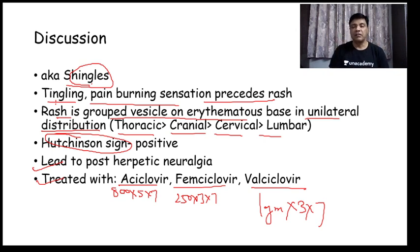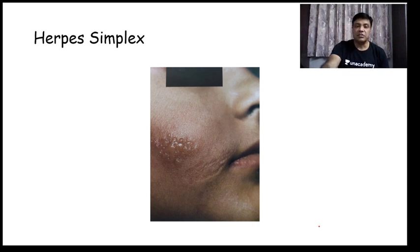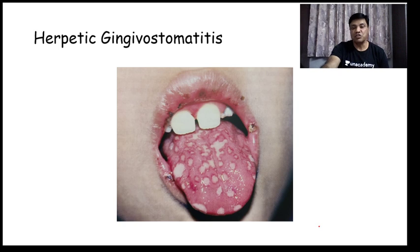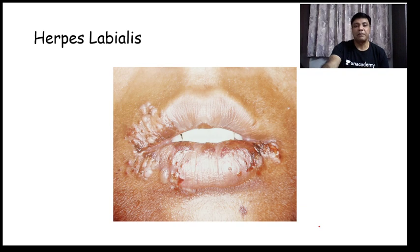Herpes simplex consists of grouped vesicles on an erythematous base and can occur anywhere in the body. Herpetic gingivostomatitis is the most common manifestation of herpes simplex, where the gingiva and oral cavity are involved. Herpes labialis, or fever blisters, are lesions seen on the mucocutaneous junction of the lips.